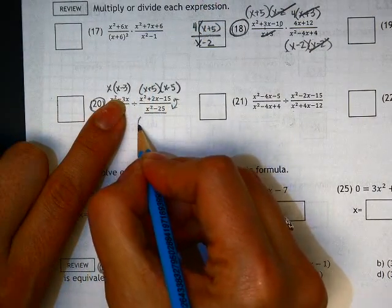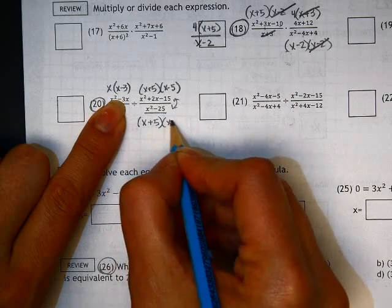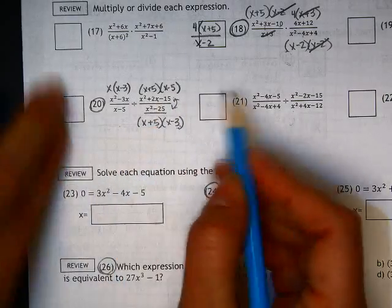This guy here, do the diamond problem: x plus 5, x minus 3. Multiplies to get a negative 15, combines to get a 2.